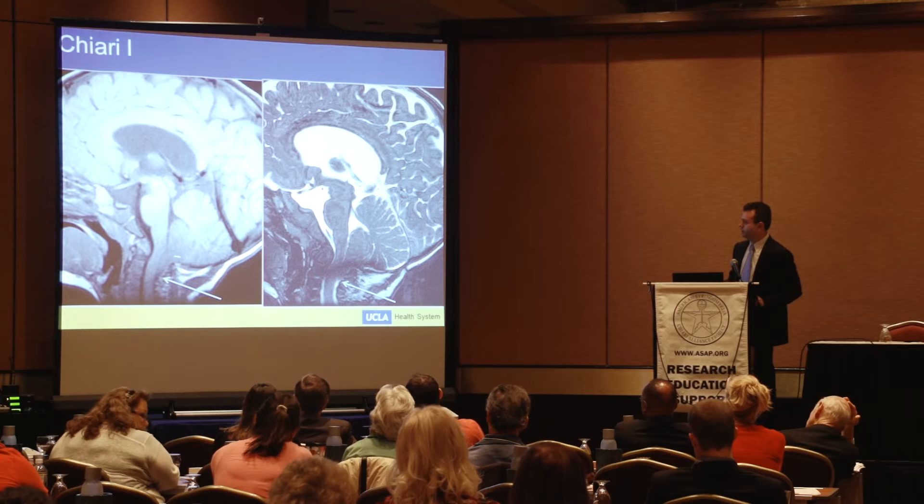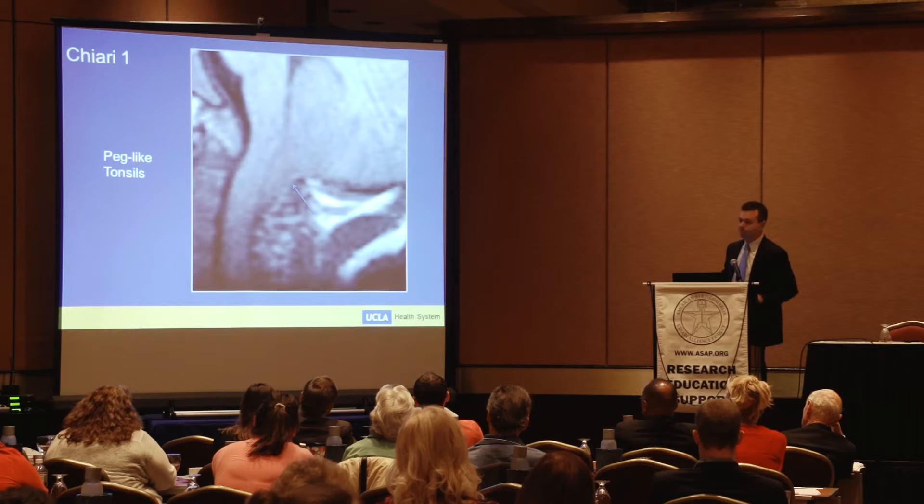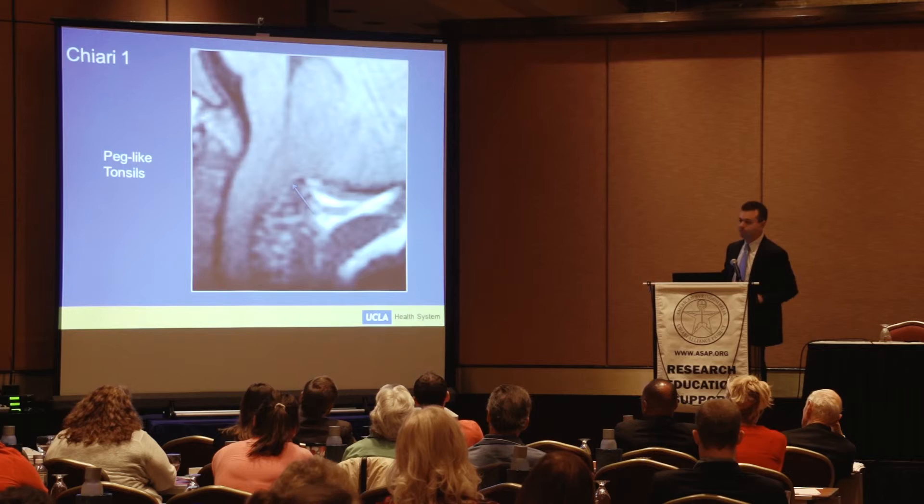Here's an example of a Chiari 1 malformation. The tonsils extrude down posterior to the spinal cord. In close-up, some people call these peg-like tonsils — to me it looks like something squeezing through a pastry bag. We see the narrowing of the canal.